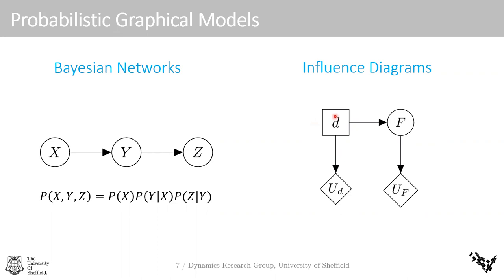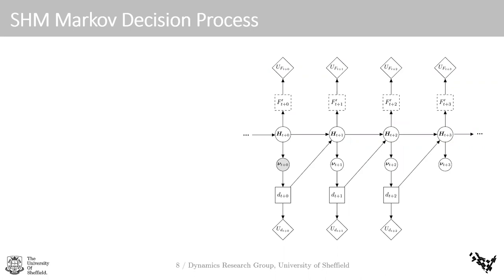Influence diagrams are an extension of Bayesian networks that incorporate square decision nodes and diamond-shaped utility nodes. These represent expected utility functions, so optimal decisions can be found by maximizing the expected utility. We can see how influence diagrams are useful for SHM decisions: we have a failure event F with some probability of occurrence influenced by a decidable action — such as repair or maintenance — and each action and failure has an associated cost.